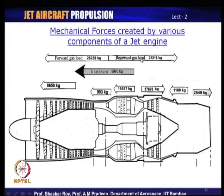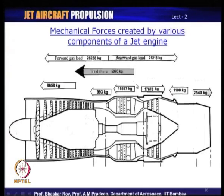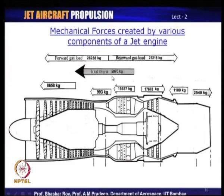When you put all the forward gas loads and rearward gas loads together, you get the total or net thrust created by the jet engine. It is a complex process, and to get a measure of it rigorously is quite complex. We simplify by saying the momentum change across the whole engine gives us a reasonable first-cut measure of thrust. A more rigorous method using component gas loads gives a more accurate estimation.